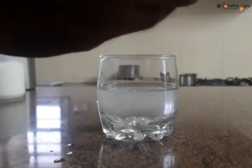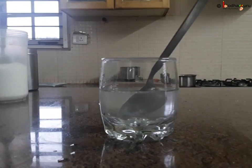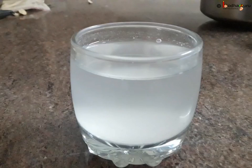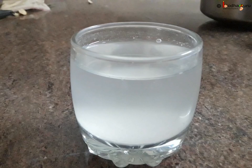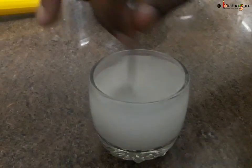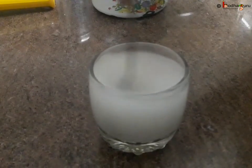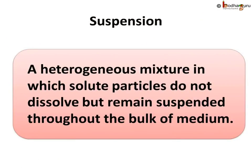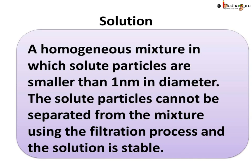But you cannot filter out salt from salt water or sugar from sugar solution. Chalk is considered insoluble in water, hence it didn't form a homogeneous mixture after getting mixed with water. This mixture is called suspension, not solution. A suspension is a heterogeneous mixture in which solute particles do not dissolve but remain suspended throughout the bulk of the medium, as in the case of chalk powder in water. Whereas a solution is a homogeneous mixture in which solute particles are smaller than 1 nanometer in diameter. The solute particles cannot be separated from the mixture using the filtration process and the solution is stable, as in the case of sugar water solution.